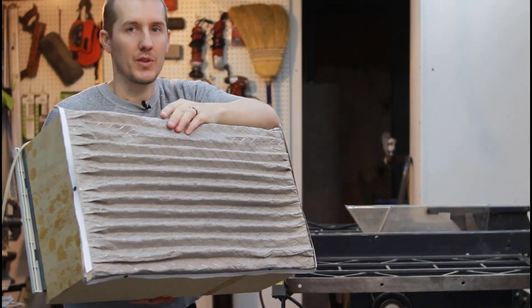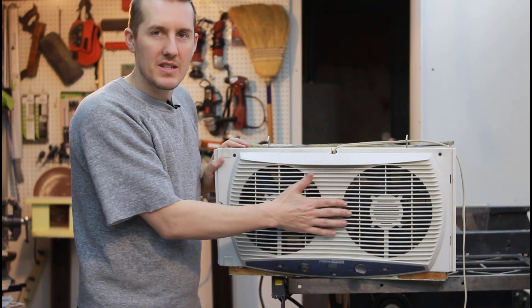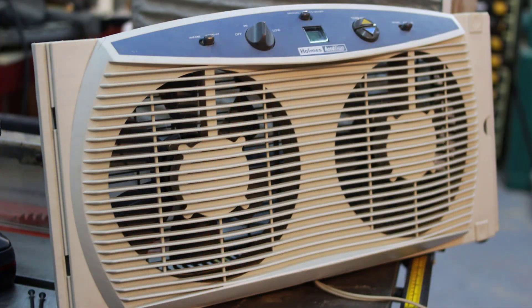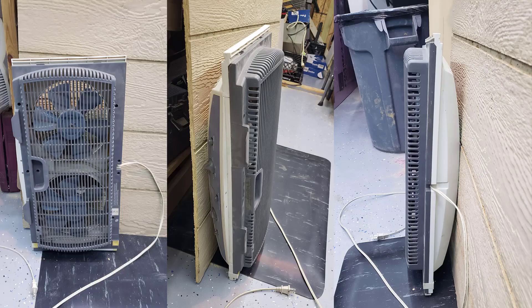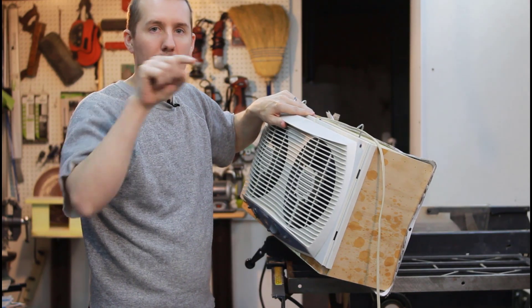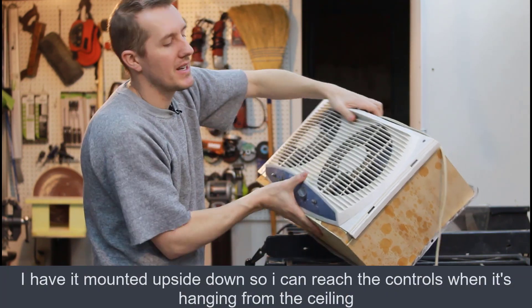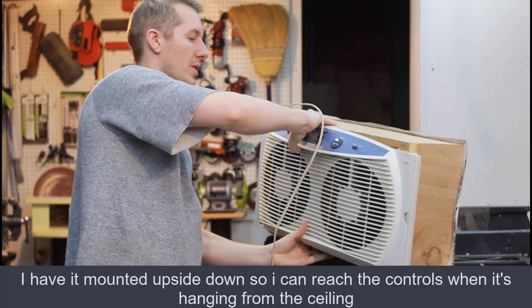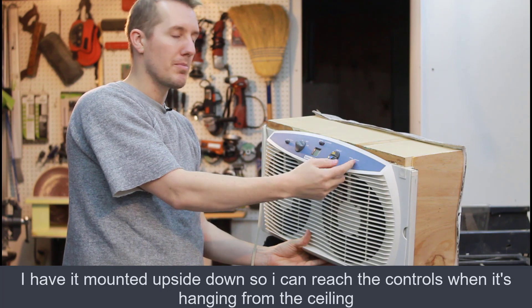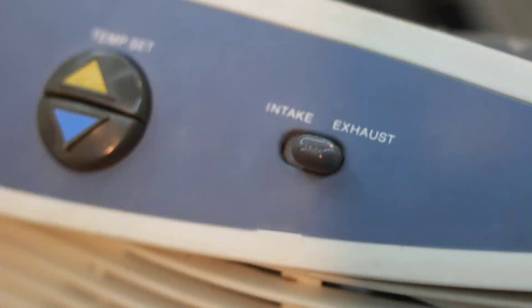The thing that makes this unique—first of all this fan is an old window fan that you would put in the window of a bedroom. It could blow in cold air or blow out hot air. The nice thing about this, I have it mounted upside down. You could set it to intake or exhaust, so you can change the direction that the wind is blowing.